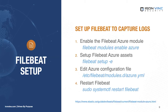Now let's walk through how to capture Azure logs with FileBeat. As a user with appropriate permissions, run `filebeat modules enable azure` to enable the Azure module, then run `filebeat setup -e` to set up the Azure FileBeat assets. In your favorite text editor, open the FileBeat Azure configuration file and populate the event hub name, the connection string, the storage account, and storage account key that we created earlier.